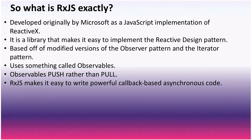RxJS was originally developed by Microsoft as a JavaScript implementation of reactive extensions, a library that makes it easy to implement the reactive design pattern. The reactive design pattern is the mindset of reacting to things as they happen rather than statically programming — for instance, reacting to a successful HTTP request or a button click.